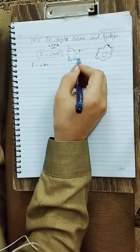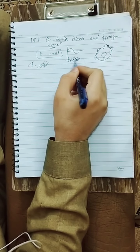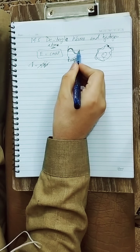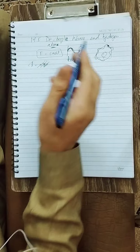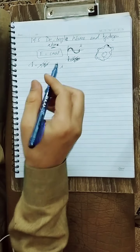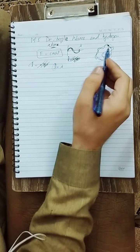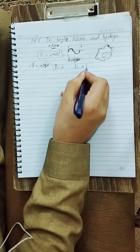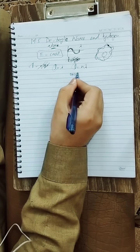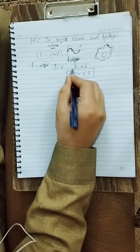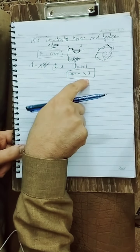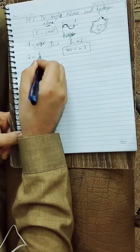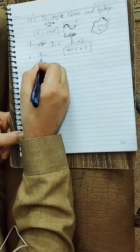Now talking about distance: in one cycle the distance is lambda. So the total length is n × lambda, and since the length equals the circumference, we have 2πr = n × lambda. We know the de Broglie wavelength is lambda = h/p.